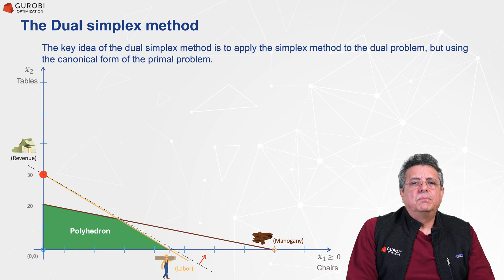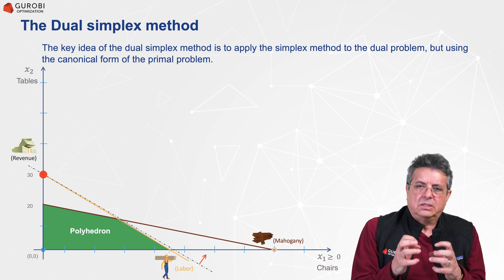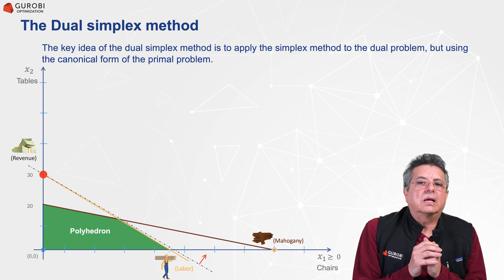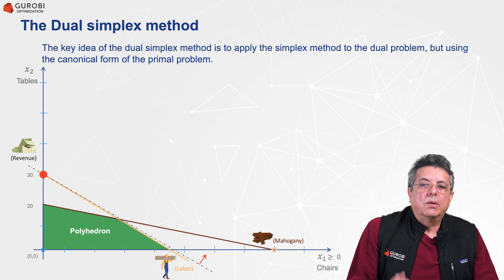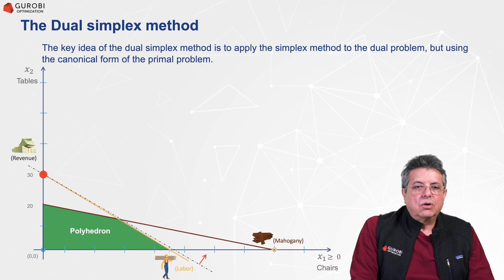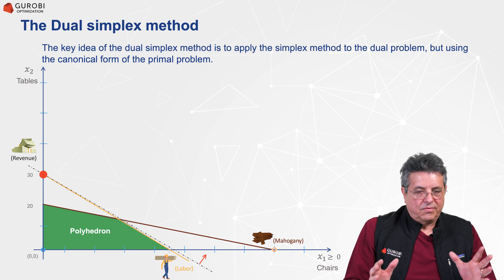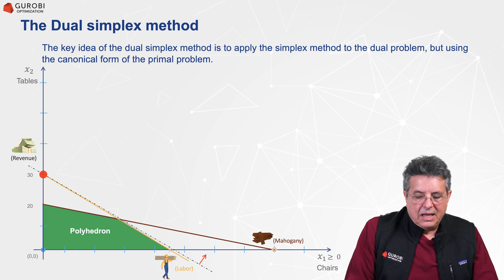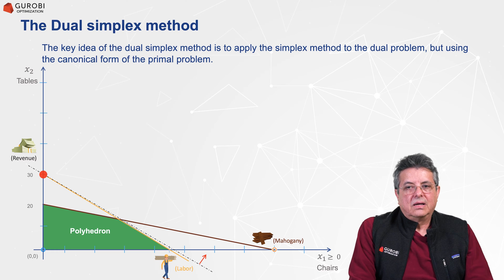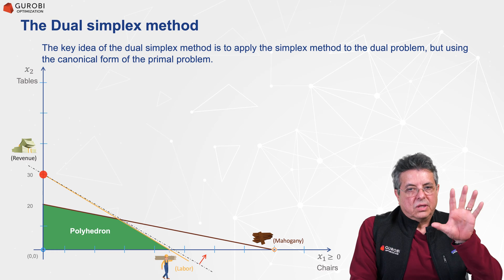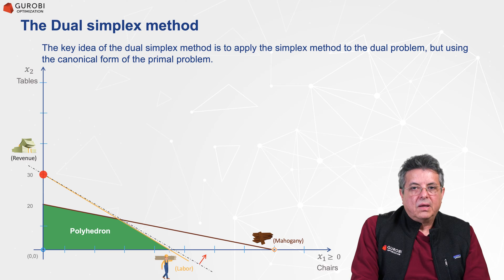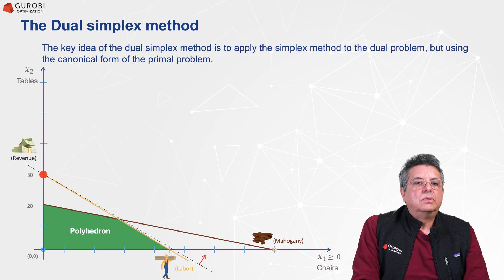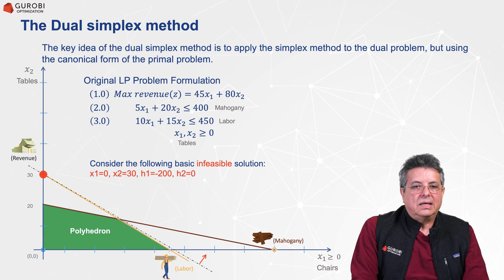The key idea of the dual simplex method is to apply the simplex method as we have learned to the dual problem, but using the canonical form of the primal problem. Since the information of the primal and dual problem are essentially the same, we are going to use the canonical form of the primal problem and make a variation of the simplex method to solve this problem using duality ideas.